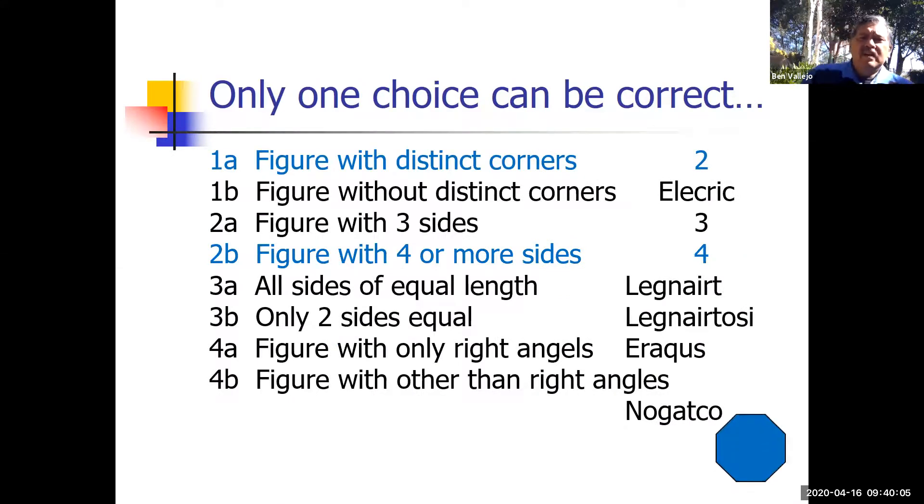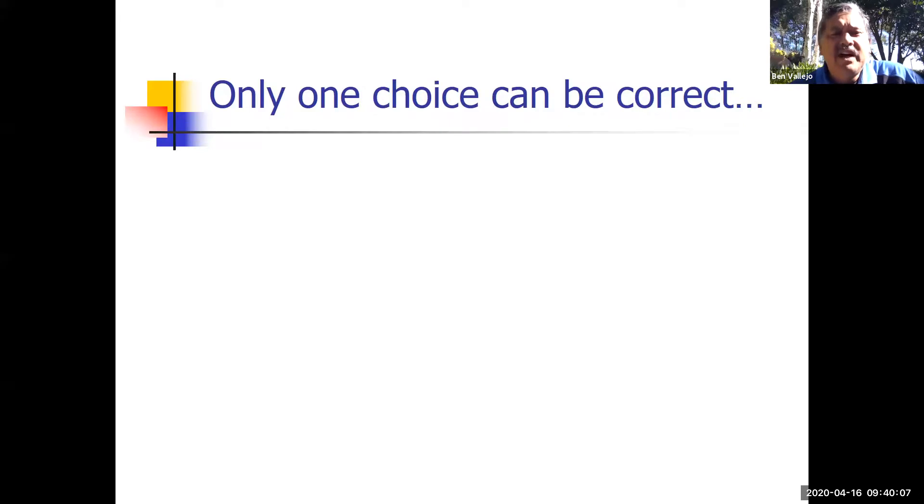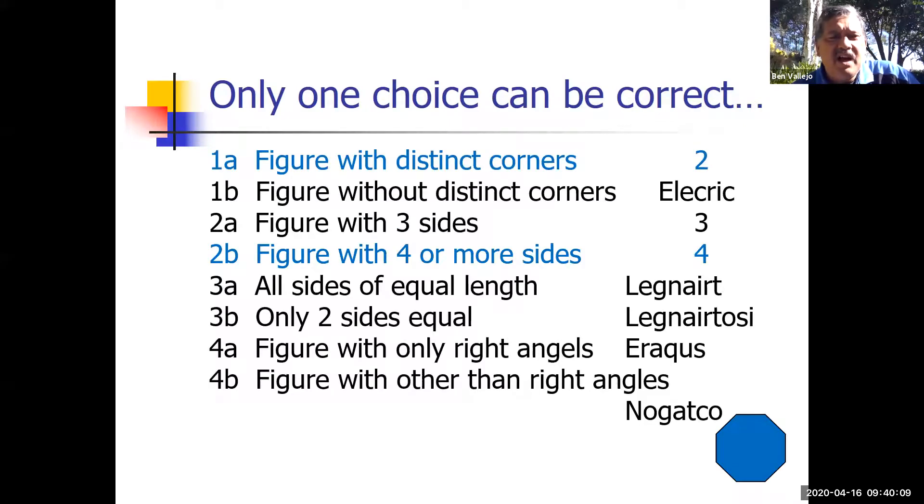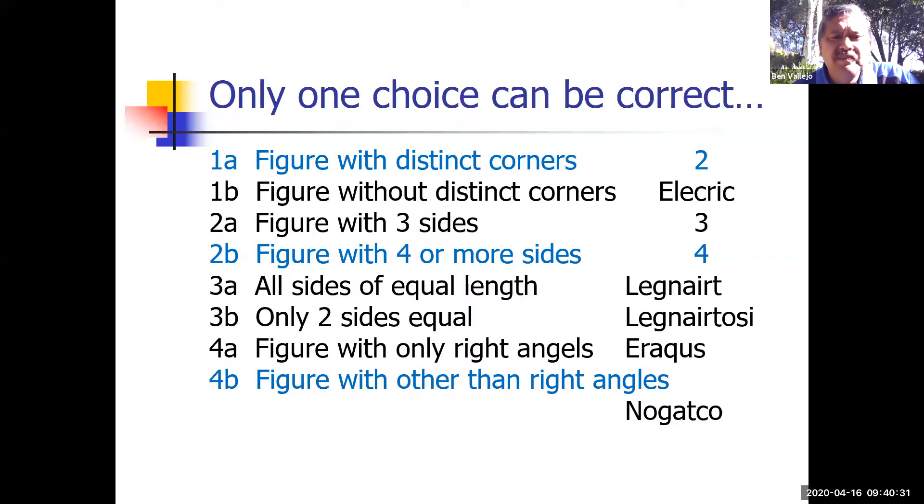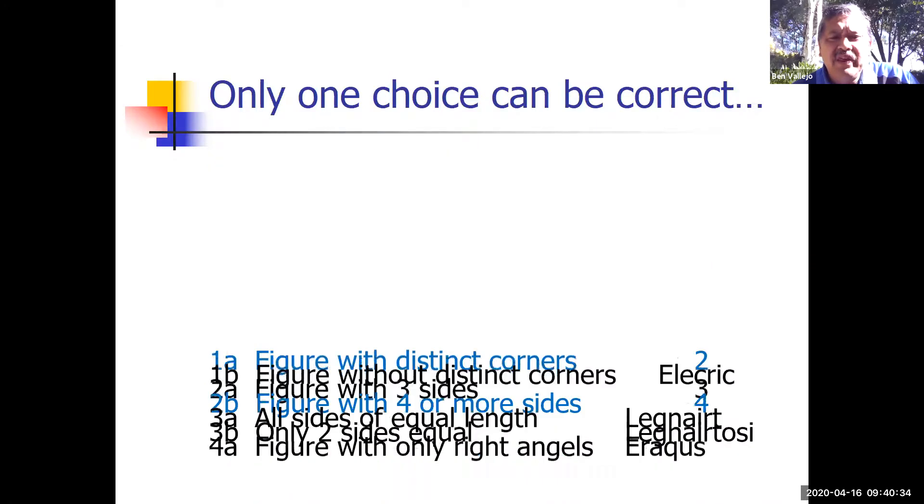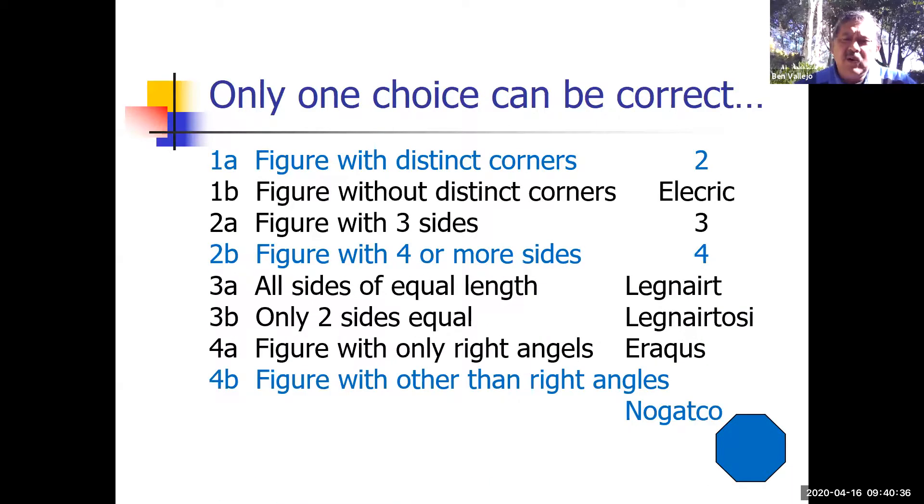When I take a look at number four, it says 'figures with only right angles' or 'figure with other than right angles.' Does it have other than right angles? It does. So 4b is the correct answer for this guy right here, and so 4b is called the Nagatko. I went to Geometrica and I saw Nagatko.